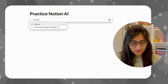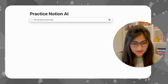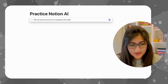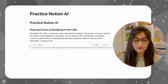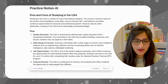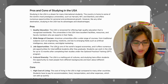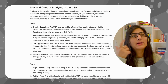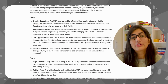Let's do a quick example: tell me the pros and cons of studying in the USA. Notion AI has now generated a very well elaborated form. You see how the format is — there is a heading and then a description afterwards. If you have an assignment you want to work on, you can use Notion AI and create a draft.